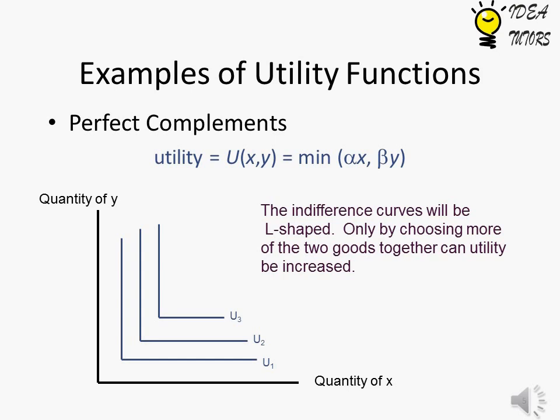For example, if I have 5 right shoes and 3 left shoes, then the total utility will be equal to 3 pairs of shoes, because I cannot use the 5 right shoes alone. I need a left shoe to complete the pair, and only a complete pair will be of any use as these goods are complementary.